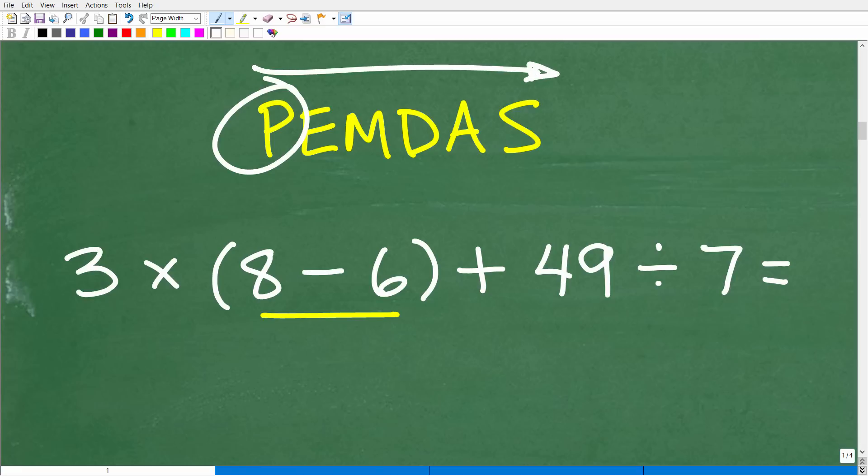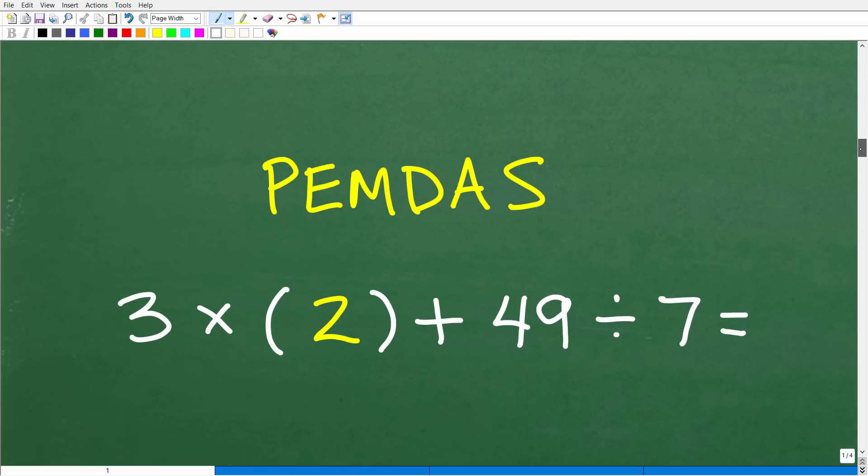do we have any parentheses? Well, obviously we do. So this is our first step. Okay, so we're going to take this one step at a time. So 8 minus 6 is what? Well, that's pretty easy. The answer is 2.